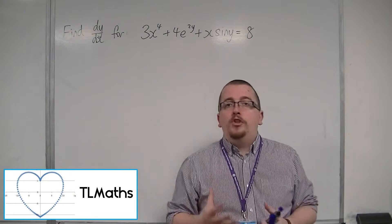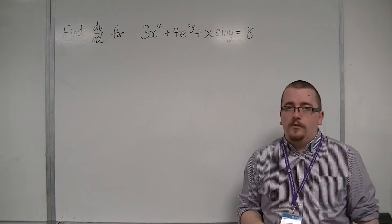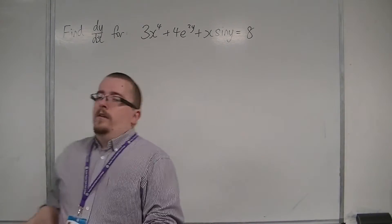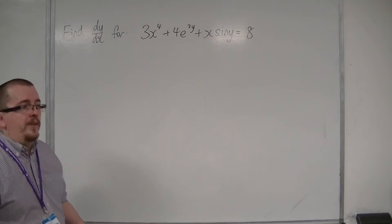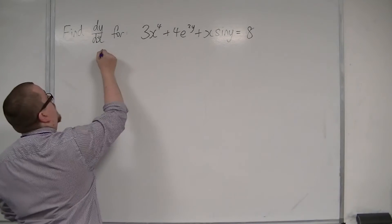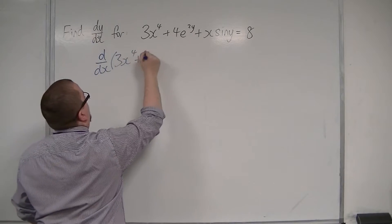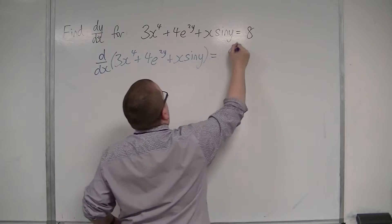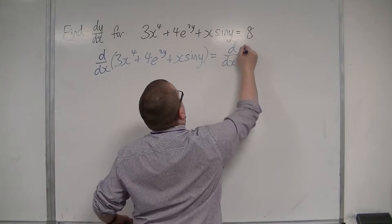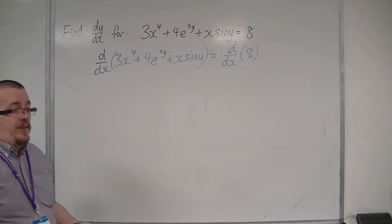So now we're ready to differentiate something that looks like this, and we specifically want to find dy by dx. So it's good practice to show to the examiner, and to everyone else, that you are differentiating with respect to x. So I'm going to write dy by dx of both sides, so 3x to the 4 plus 4e to the 2y plus x sine y is equal to dy by dx of 8. So it's really telling us what we're going to do in the next stage.